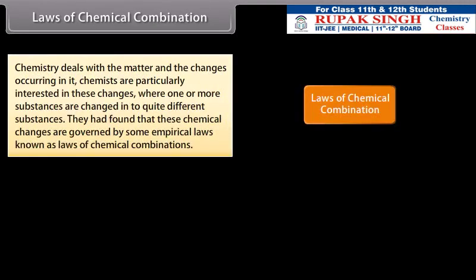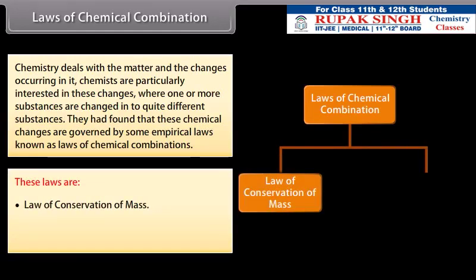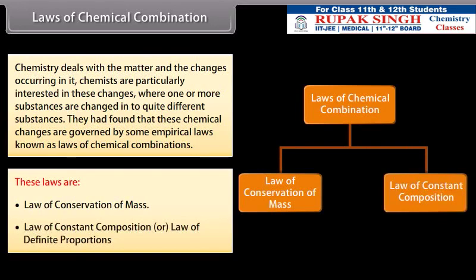Laws of chemical combination. Chemistry deals with the matter and the changes occurring in it. Chemists are particularly interested in these changes where one or more substances are changed into quite different substances. They had found that these chemical changes are governed by some empirical laws known as laws of chemical combinations. These laws are law of conservation of mass, law of constant composition or law of definite proportion.